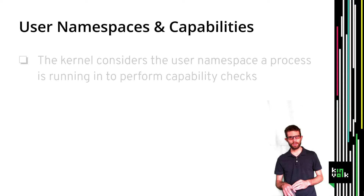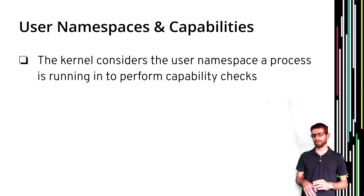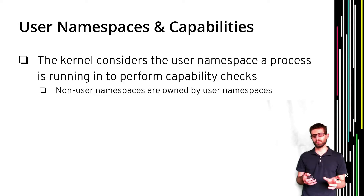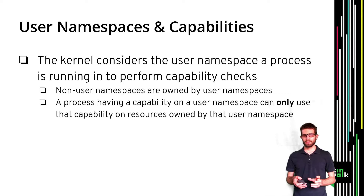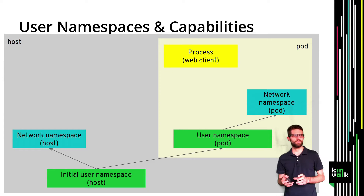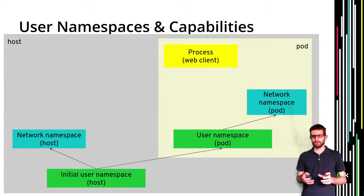Another important feature of user namespaces is that they also isolate capabilities. When the kernel performs a capability check, it takes into consideration which user namespace a process is running in, in order to determine if the process is able to perform that privileged operation. Non-user namespaces like the network namespace and PID namespace are always owned by a user namespace, and a process can only use a capability on resources owned by that specific user namespace.